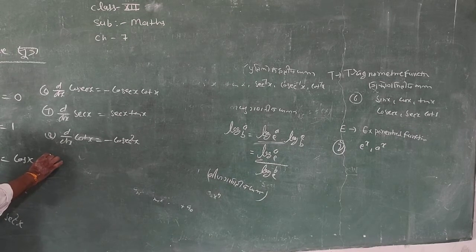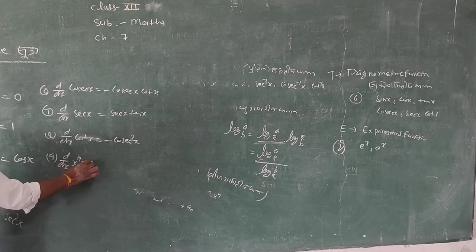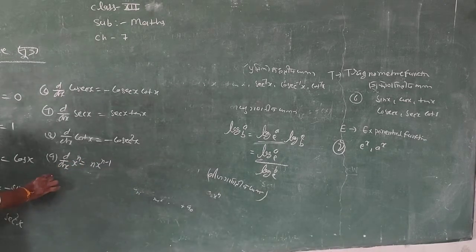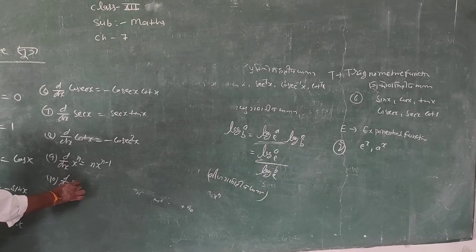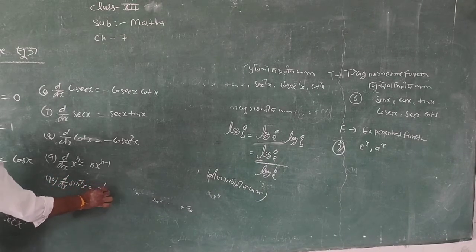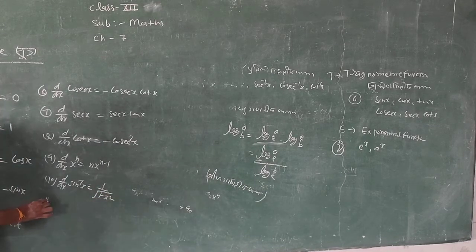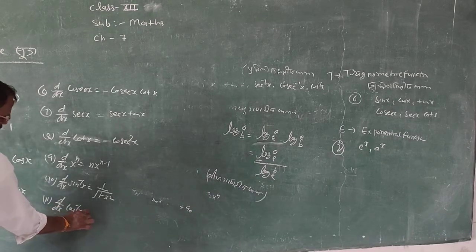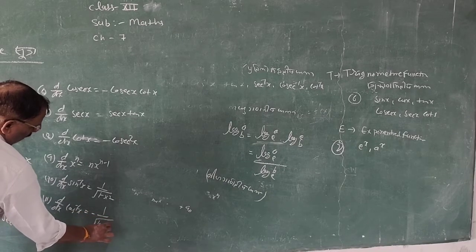Formula 9: Differentiation of x to the power n = n · x to the power (n−1) — the algebraic formula. Formula 10: Differentiation of sin inverse x = 1 upon under root (1 − x²). Formula 11: Differentiation of cos inverse x = minus 1 upon under root (1 − x²).